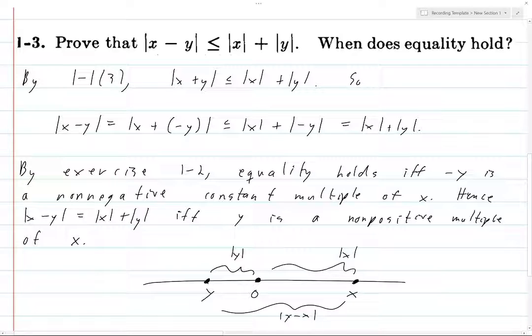We see only when y is a non-positive multiple of x do you have absolutely no cancellation between the norms, and so you get equality of this sum and the absolute value of the difference. There we go, that completes the proof.